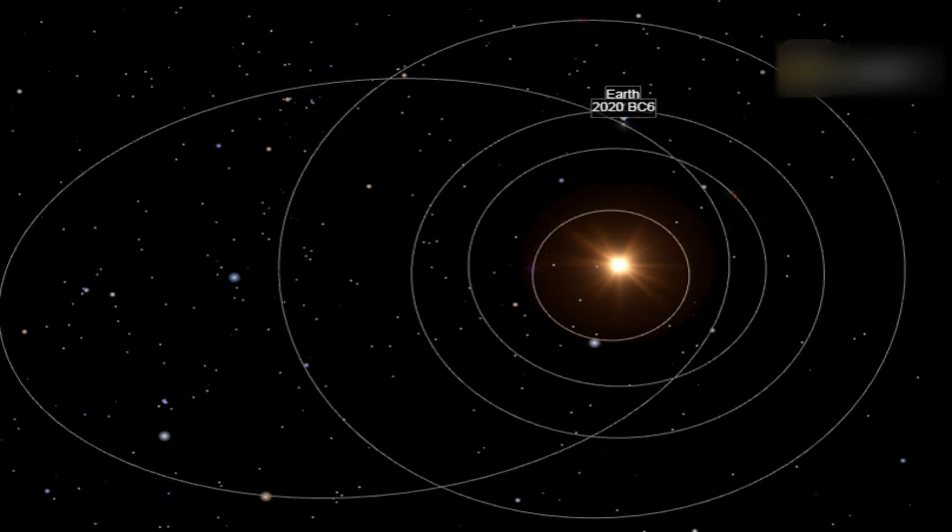2020 BC 6's orbit was determined by observations dating back to May 5, 2014. The last official observation was made on February 22, 2020. The IAU's Minor Planet Center has recorded 72 observations that were used to determine its orbit.